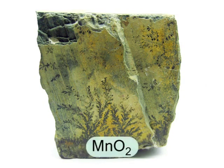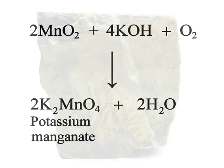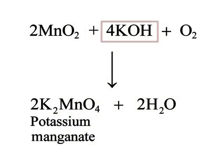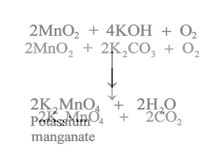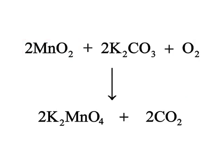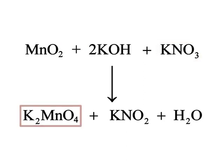MnO₂ is an important ore of manganese. Manganese dioxide gets fused with potassium hydroxide and heated in air to form potassium manganate and water. Manganese dioxide also gets fused with potassium carbonate and heated in air to give potassium manganate and carbon dioxide. Manganese dioxide also reacts with potassium hydroxide and potassium nitrate to give potassium manganate, potassium nitrite and water.